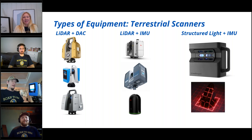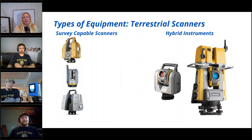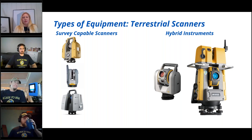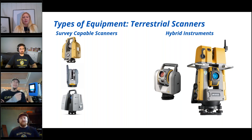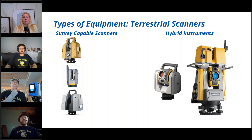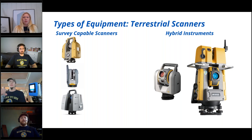Some newer scanners with more accurate sensors can also survey — they can actually measure control points in the field, which is super useful. A newer trend the last couple years has been hybrid instruments combining traditional survey functionality like a total station with 360-degree dome laser scanning capability. Have any of you used hybrid instruments on your projects?